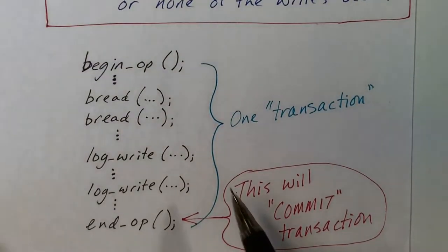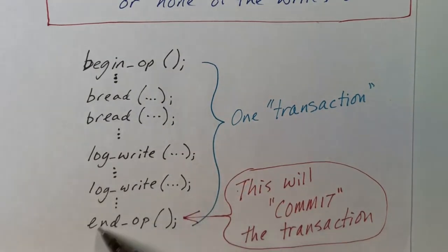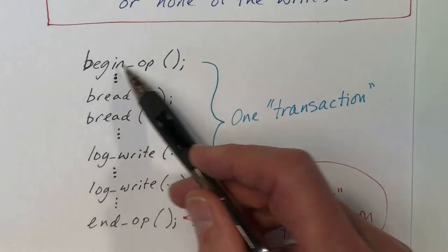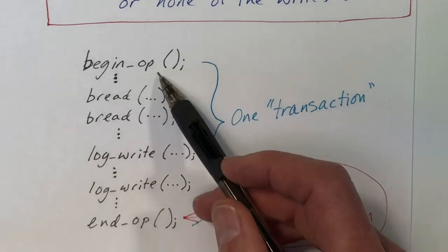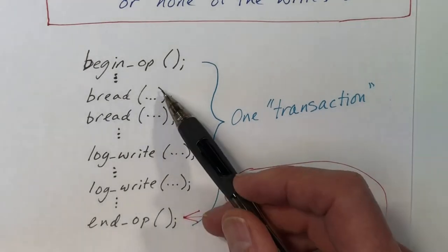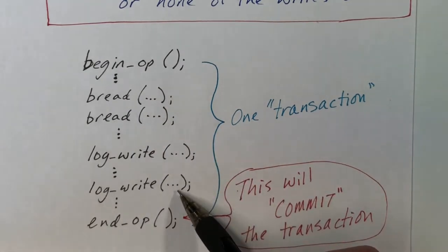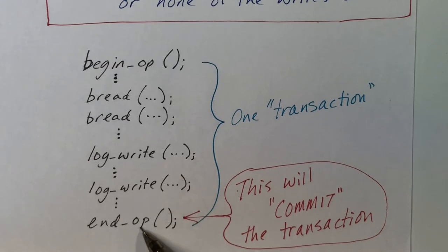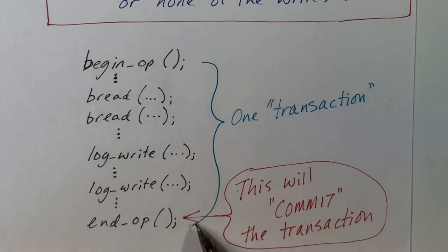What this looks like in xv6 involves these functions: begin_op, bread, logwrite, and end_op. The begin_op function is called first and starts what we call a transaction, and end_op ends the transaction. Between these two we will have a number of writes and reads, but it's the writes we're focusing on. When the end_op function is called, the transaction is complete, and it signals to the system that everything will either all happen or not happen at all.